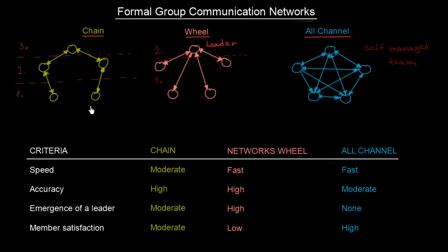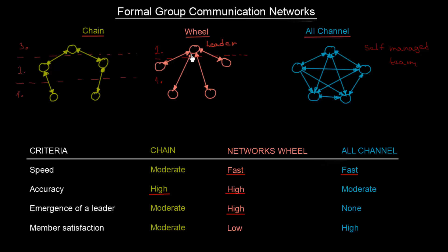The choice depends upon which criteria are important for you. For instance, if speed is important, you should go for either the wheel or the all channel network, because under the chain the communication is quite slow. If you care about emergence of a leader, you should definitely go for the wheel network, where the position and emergence of a leader is really supported.